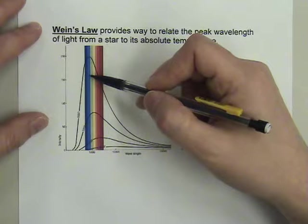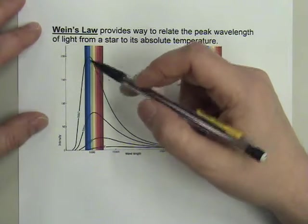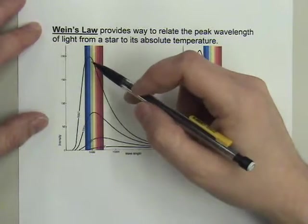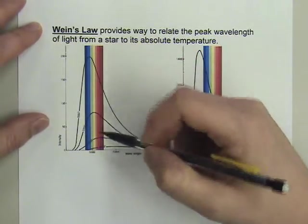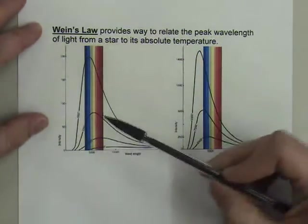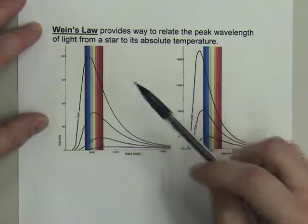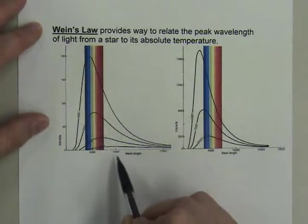Remember, it's a T to the fourth dependence. Number two, the second thing that we find is that as we increase the temperature, the peak is moving to, in this graph, to the left. Meaning that the wavelength is getting shorter and shorter.